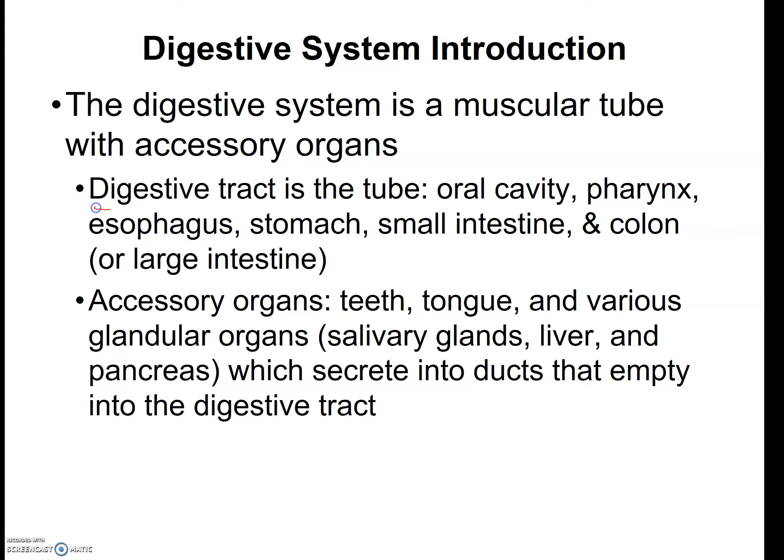That's the digestive tract, which is a separate grouping of organs compared to the accessory organs. Accessory organs are called accessory because you may or may not have them present, but you can still digest food without them. Our accessory organs include things like teeth, your tongue, several glands, salivary glands found in your mouth, the liver, and the pancreas.